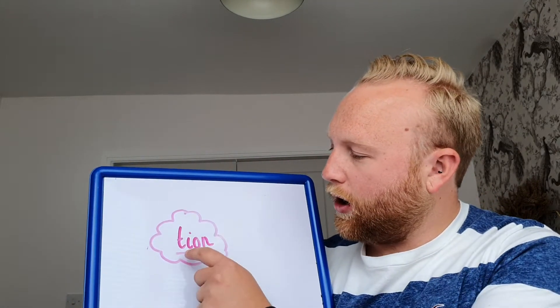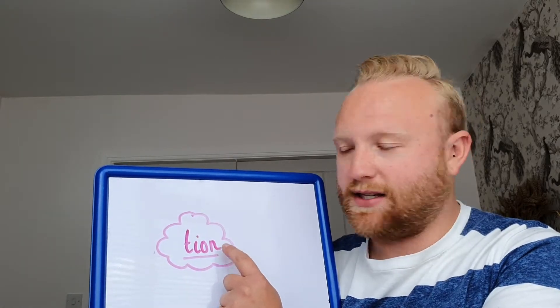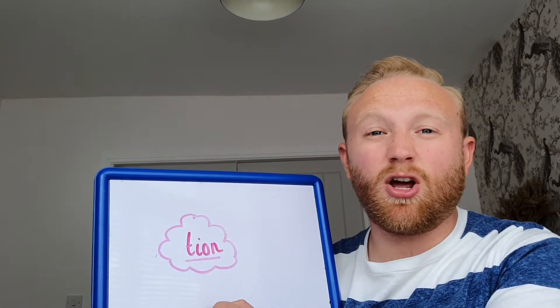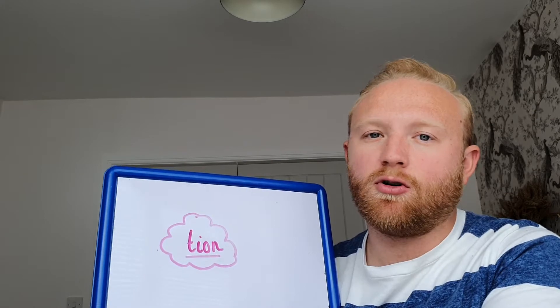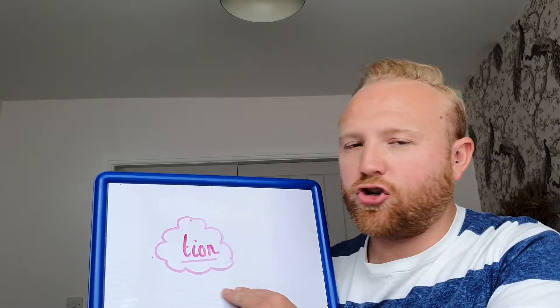So we've got one, two, three, four letters which are making one sound here. So we call it a quadraph — four letters, one sound would be a quadraph. So we've got 'shun'.